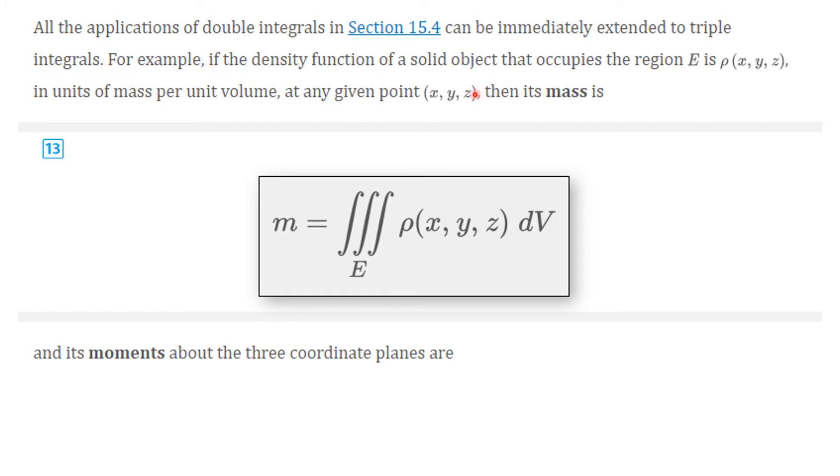if the density function of a solid object that occupies the region E is, and this is a three-dimensional region, is rho of x, y, z. That means the density depends on where you are. And you use mass per unit volume, which is really the way we tend to define density to start with at a given point. Then its mass is found by integrating over the entire solid, the density and mass.